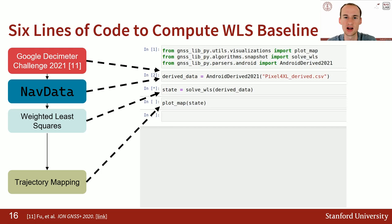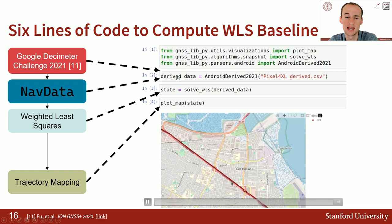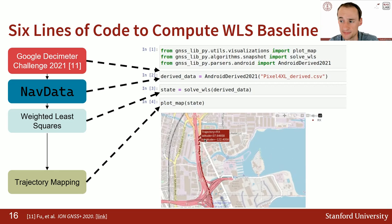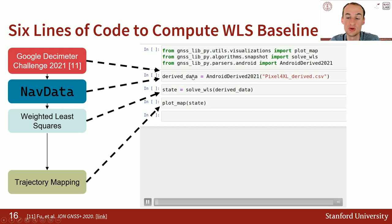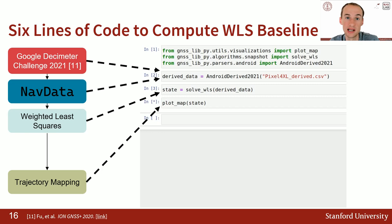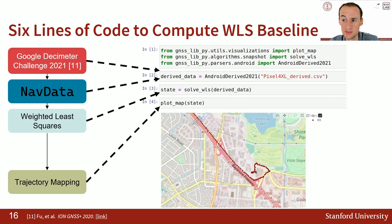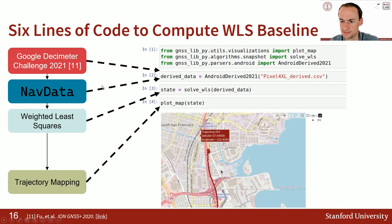To walk through a very simple example pipeline: at the top, we simply import from gnss-lib-py the functions that we want to use. Then in the second line, we load in the Android-derived data from the Google Decimeter Challenge last year into our NavData custom Python class. We solve weighted least squares on that data, and then we plot that data on a map. Simply with some import statements and three lines of code, we can go from this GNSS dataset to a map of the trajectory.